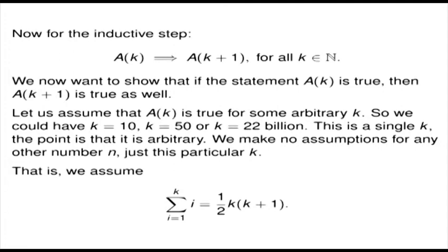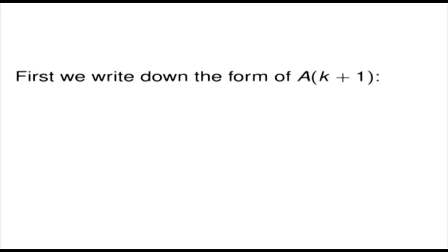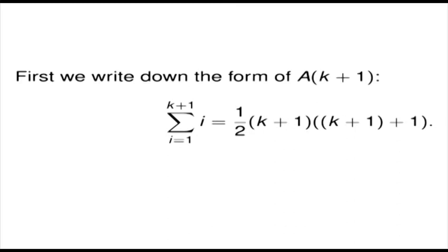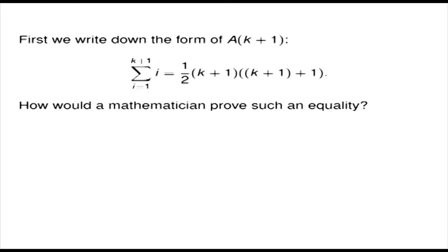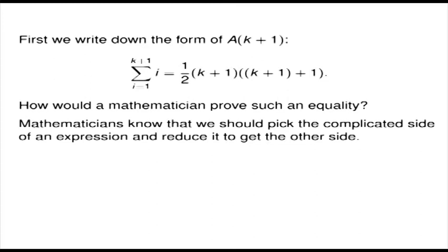First we write down the form of A(k+1) — this will guide us to where we're going. So the sum from i equals 1 up to k+1 of i should equal one half times k+1 times k+2. Now, how would a mathematician prove such an equality? Mathematicians know they should take the most complicated side of an expression and reduce it to the other side. We don't start by assuming the equation and working down to something true — that can lead you astray. We should take the complicated side and reduce it to get the right-hand side we're after.